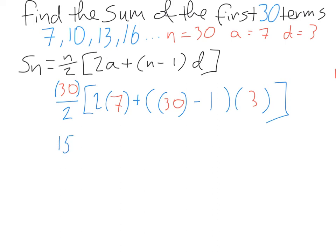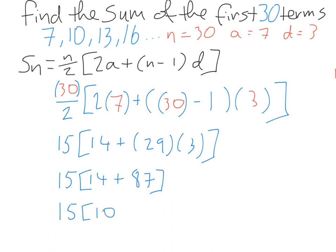30 divided by 2 is 15. 2 by 7 is 14. 30 minus 1 is 29, and that's going to be multiplied by 3. So again, we follow BIMDAS or BODMAS. We're going to do what's inside the brackets, but inside the brackets we have some adding and some multiplying, so we do the multiplying first. 29 times 3 is 87. So again, we do inside the brackets. 14 plus 87 is 101. And then 15 times 101 is 1515. So the sum of the first 30 terms of this sequence, 7, 10, 13, 16, if we were to add them all together, the first 30 terms will end up at 1515.